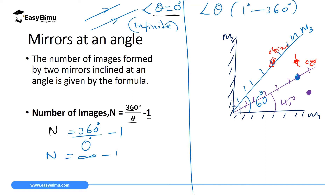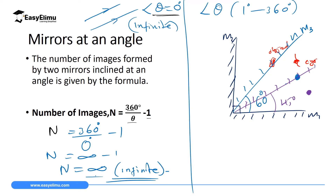Consider this analogy: if you have several coins in your pocket and you don't know how many, then you remove one — you still won't know how many remain. Similarly, if you have an infinite number of images and subtract one, the number of images that remain is still infinite. So when mirrors are parallel, the angle between them is zero, and any number divided by zero is infinite — the number of images is infinite.